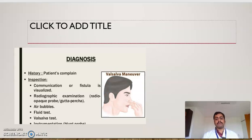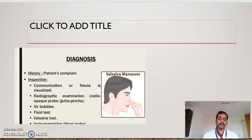Diagnosis of oroantral communication involves taking a history — the patient complains of difficulty while breathing or nasal discharge. On inspection, the communication or fistula is visualized. Radiographic examination uses a radiopaque probe or gutta-percha points. Additional diagnostic tests include air bubble test, fluid test, Valsalva test, and instrumentation by means of a blunt probe.